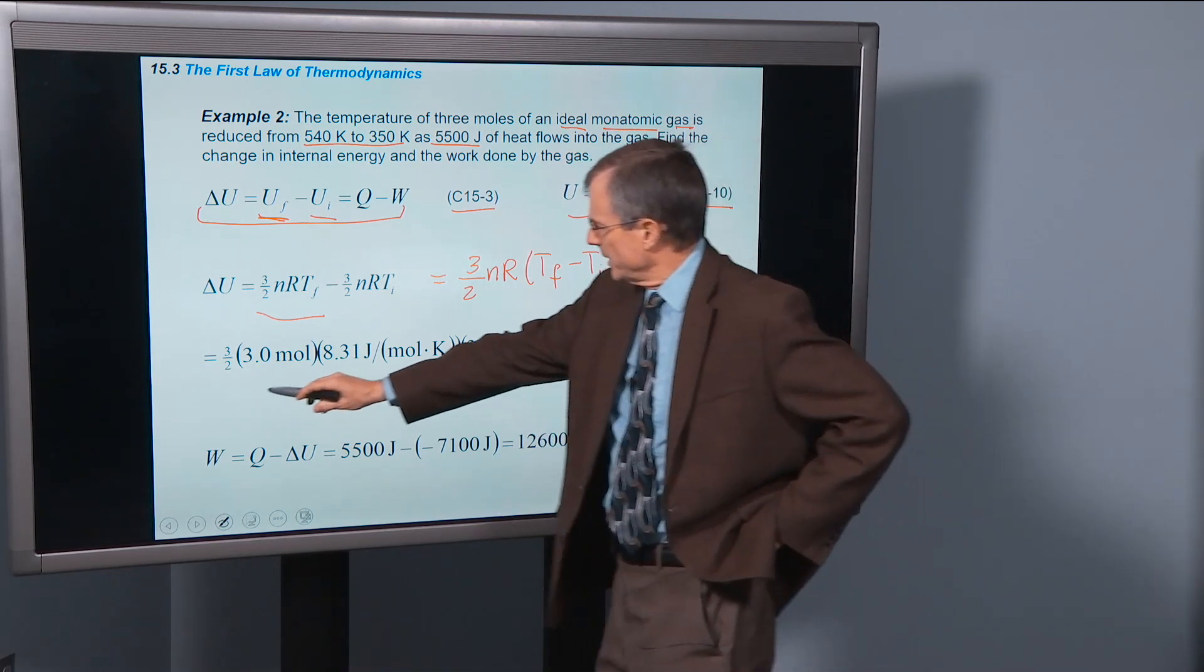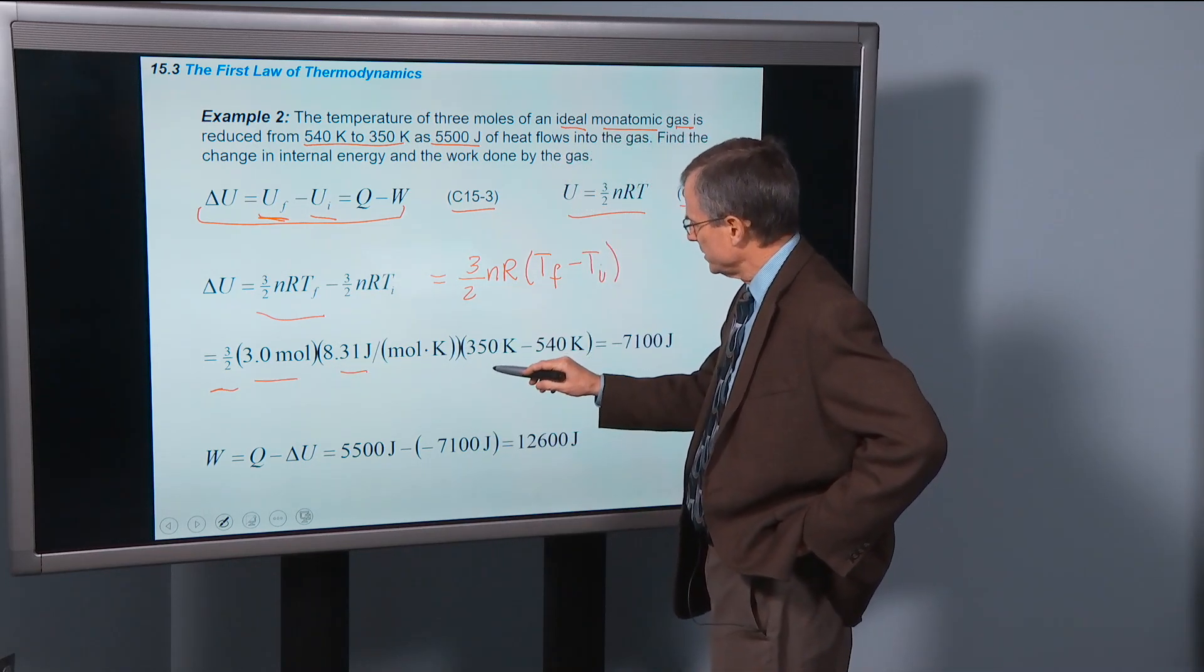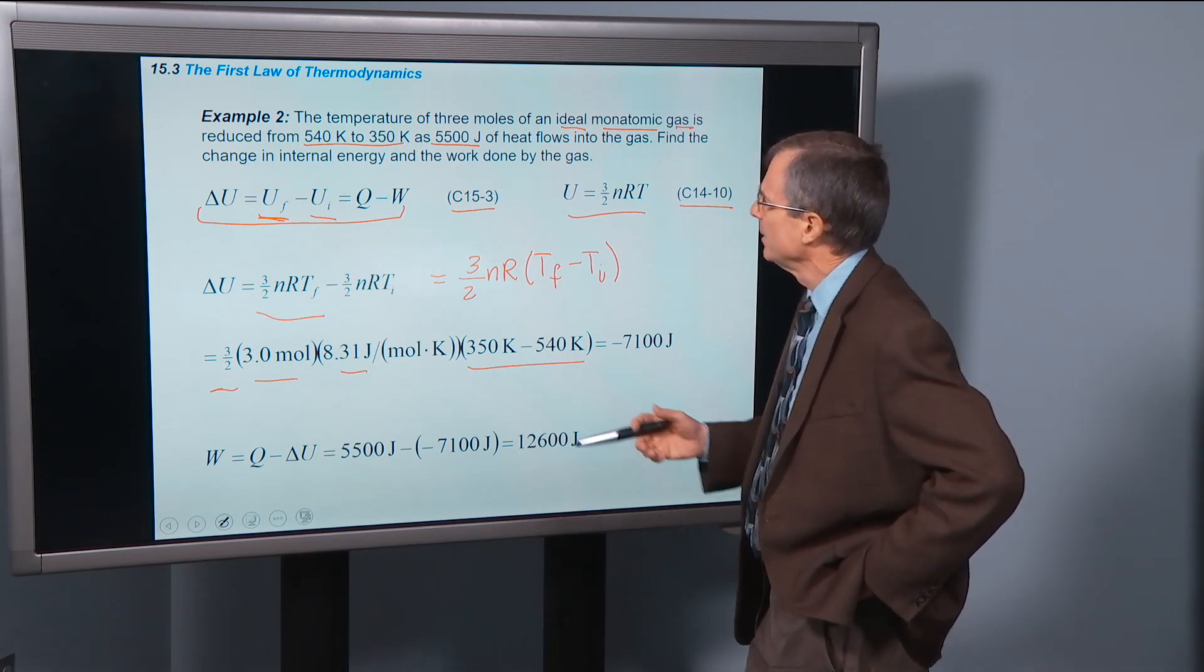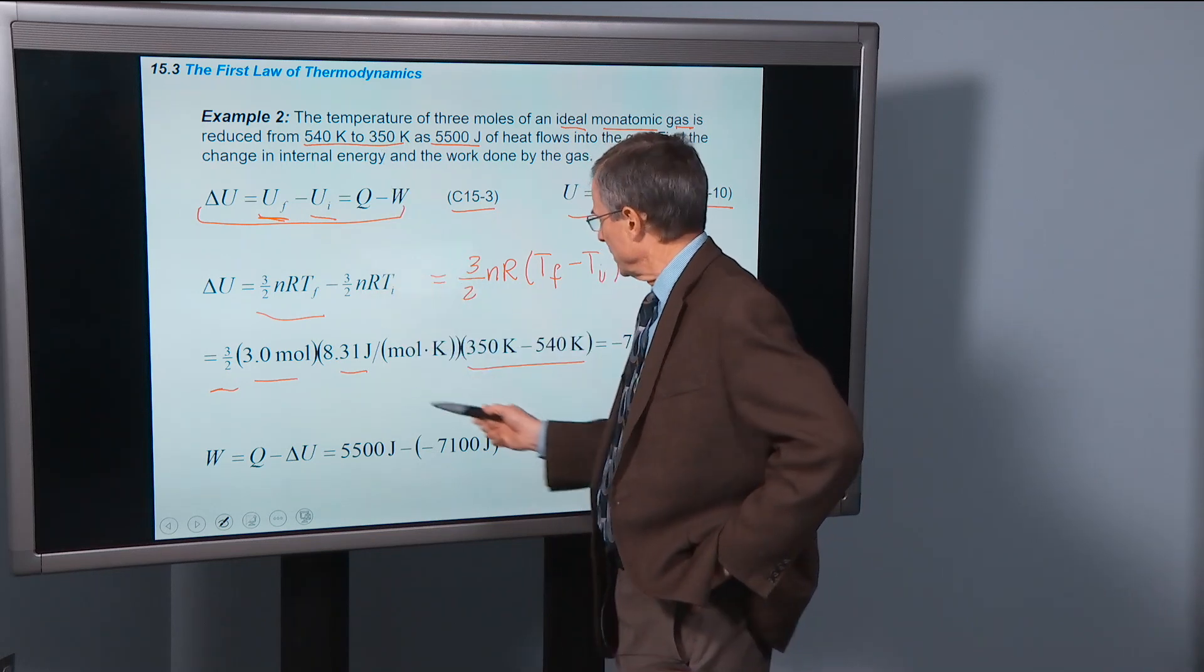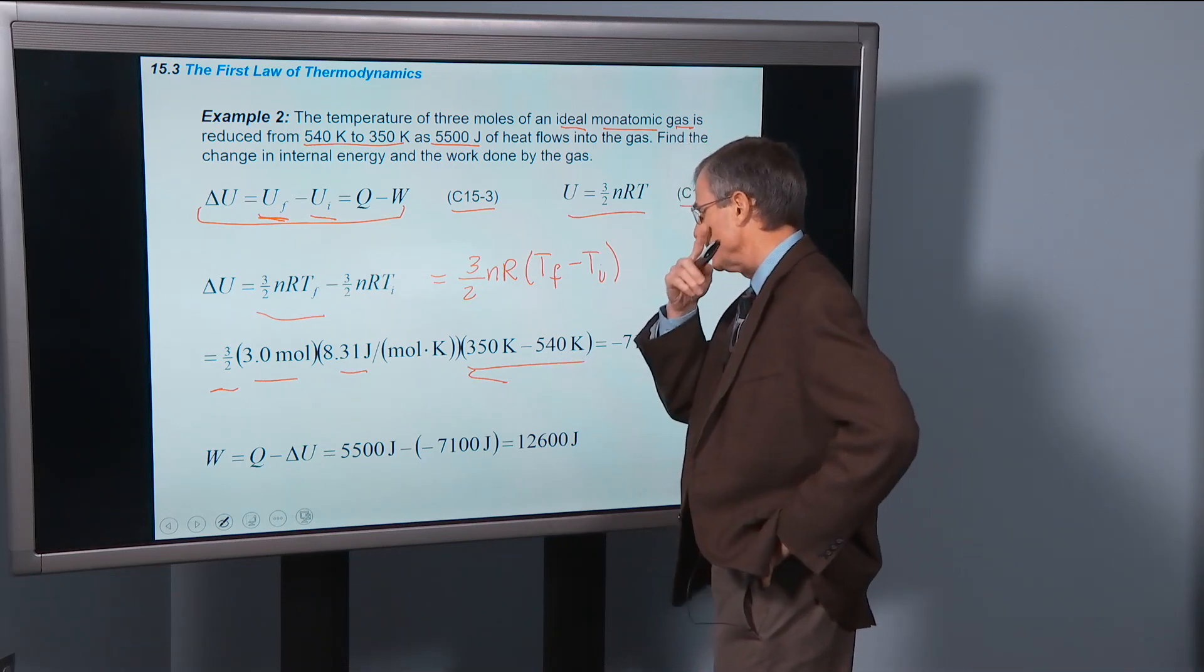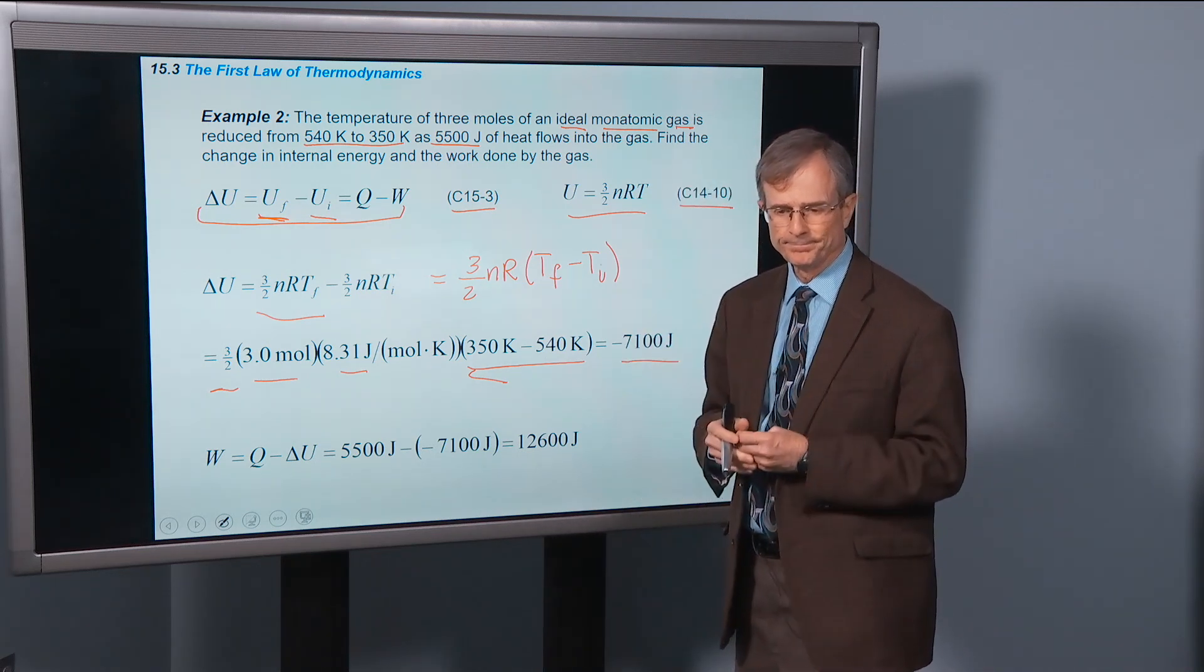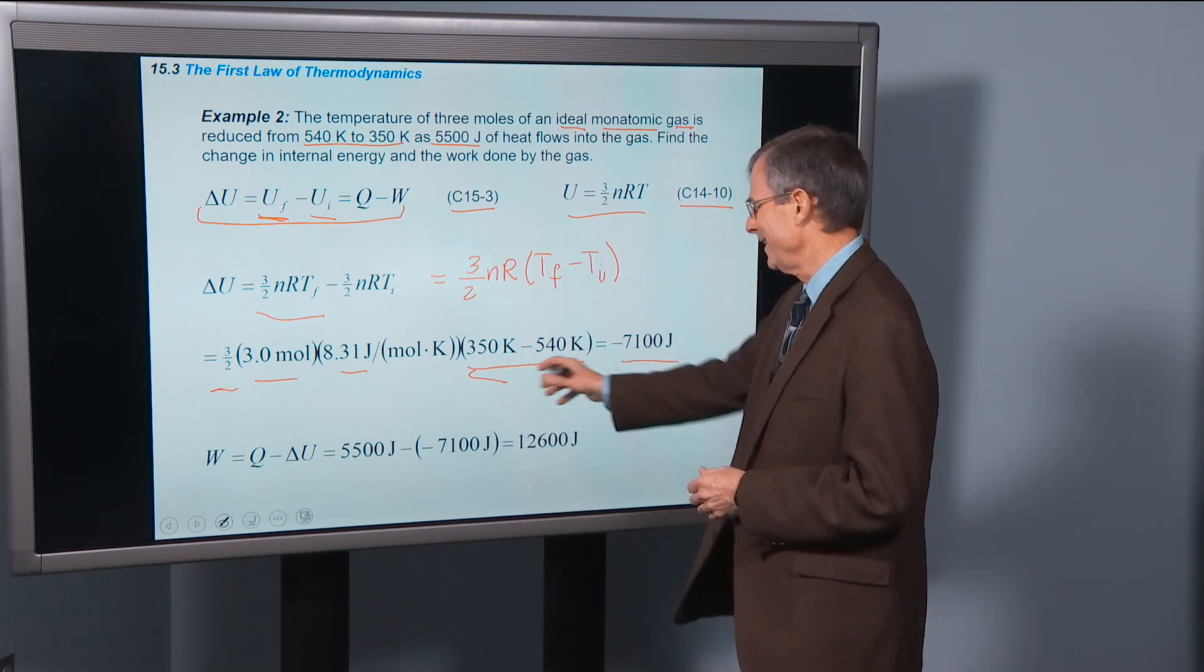So that's the 3/2 here. We've got 3 moles, 8.31 joules per mole kelvin times the difference between the two temperatures, 350 minus 540. Notice that the final is 350, and we need final minus initial to have a delta. So 350 minus 540 is going to give us a negative number. The actual change in the internal energy is negative, meaning that the temperature will go down. Well, we knew that already.